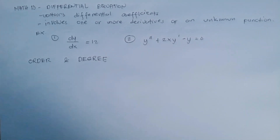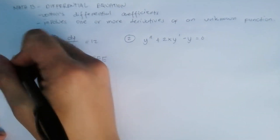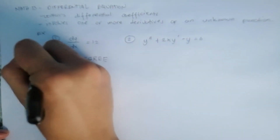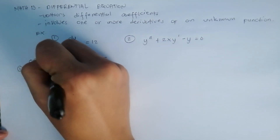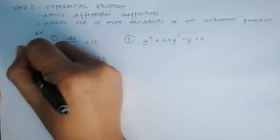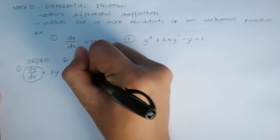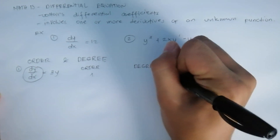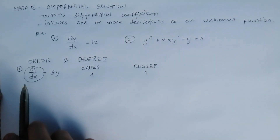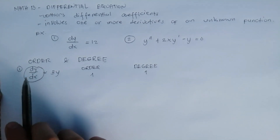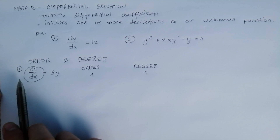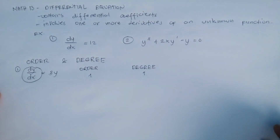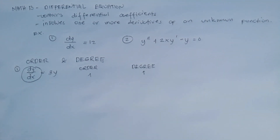Let me give you examples. For example number one, we have dy/dx = 3y. This is a first-order equation, so the order is 1 and the degree is also 1. The basis for reading the degree is the term with the highest order. Before identifying the degree, double-check if the equation is a polynomial — take note of that.